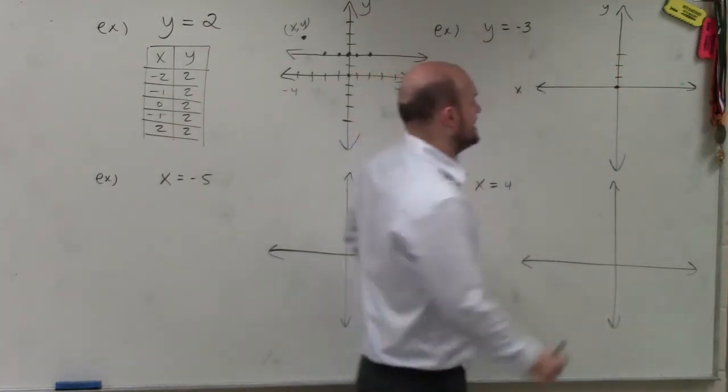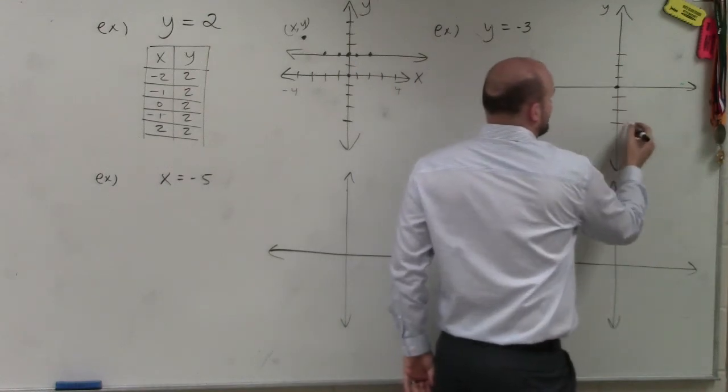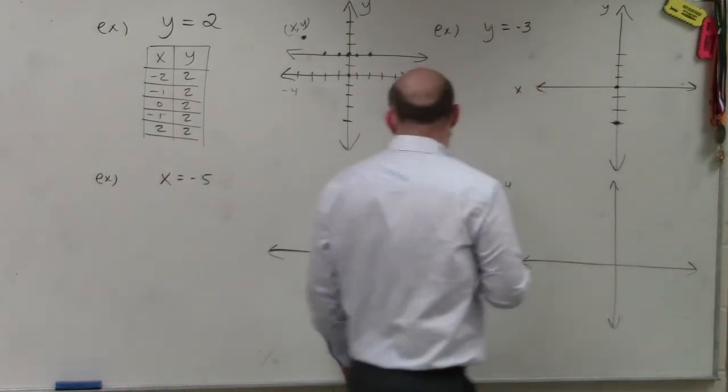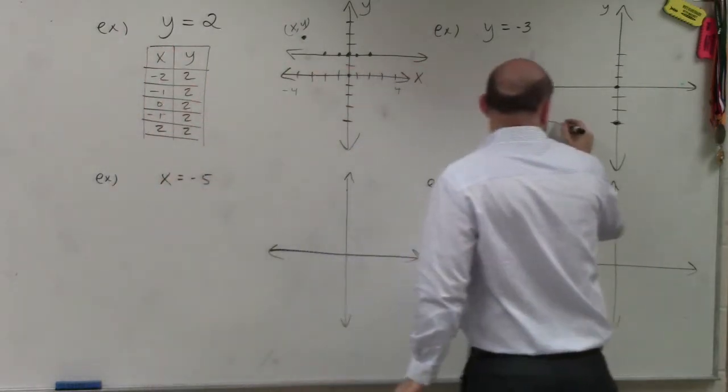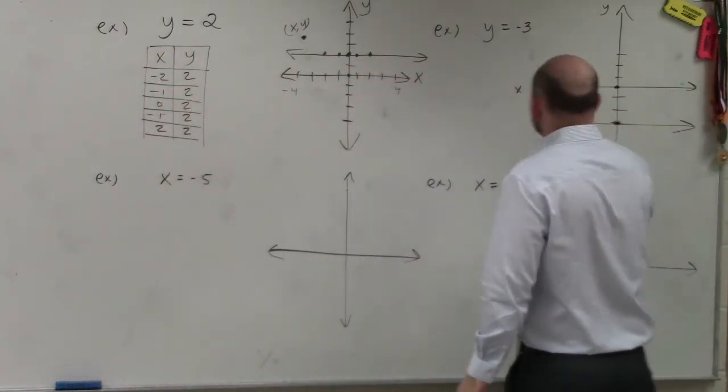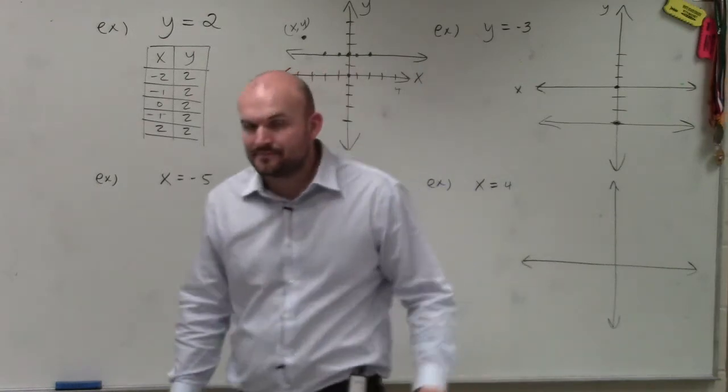Well, we're saying y is equal to negative 3. 1, 2, 3. So you just find where y is equal to negative 3. And then using your understanding of the table, you can understand that y equals negative 3 produces a horizontal line, all right?